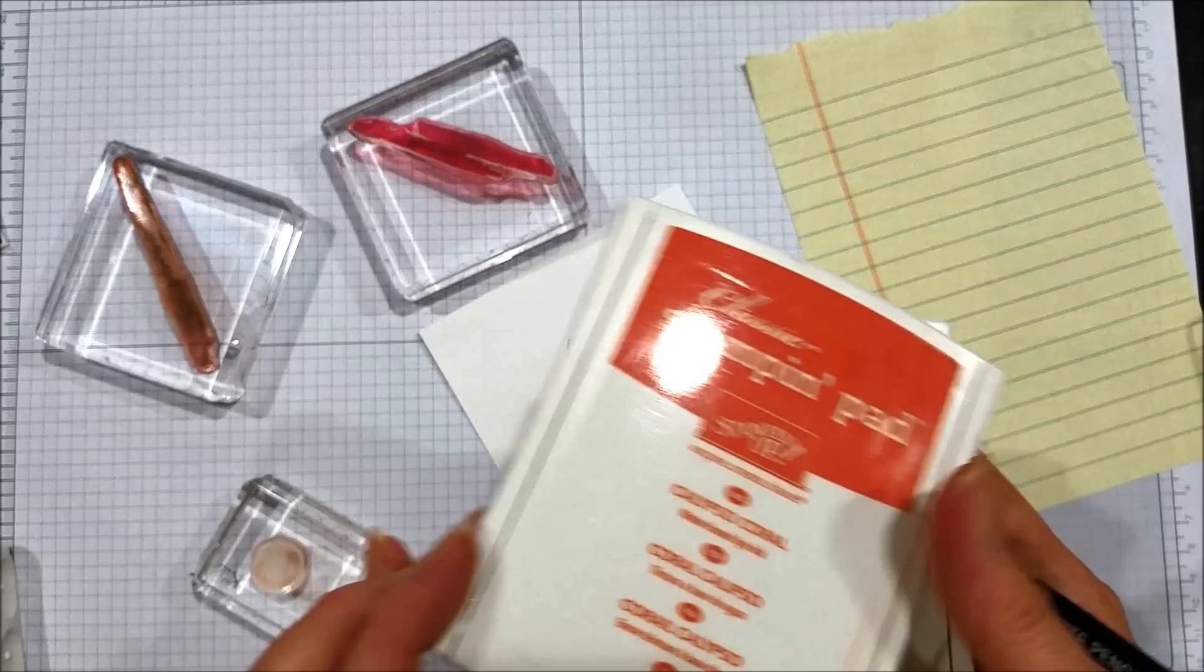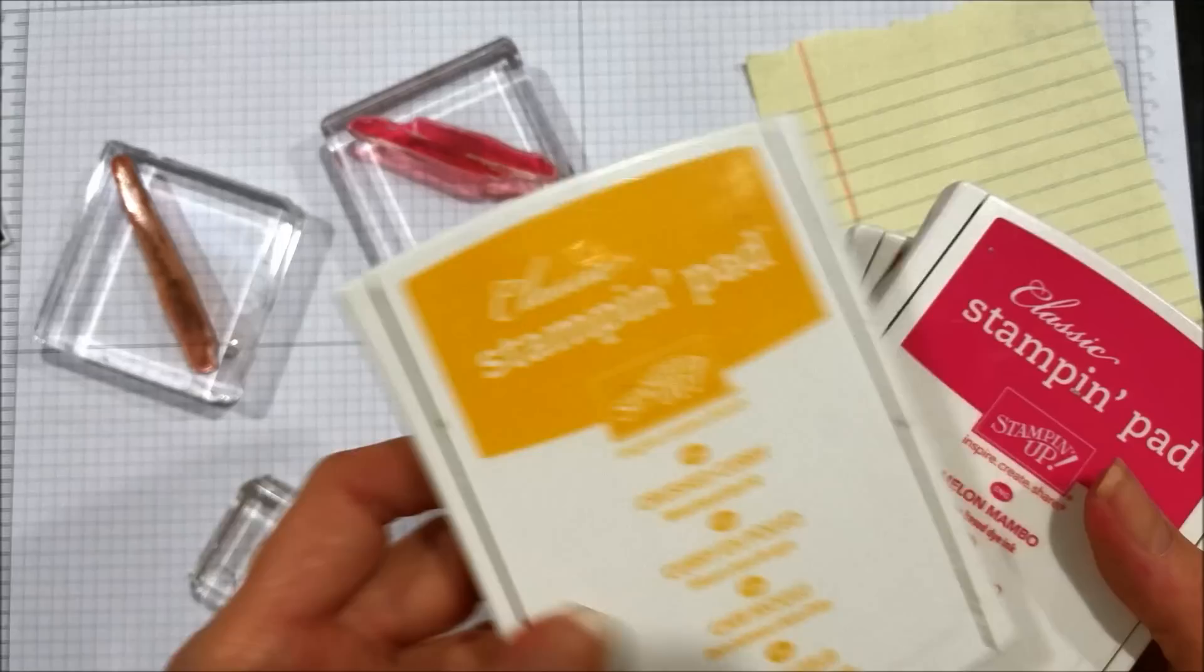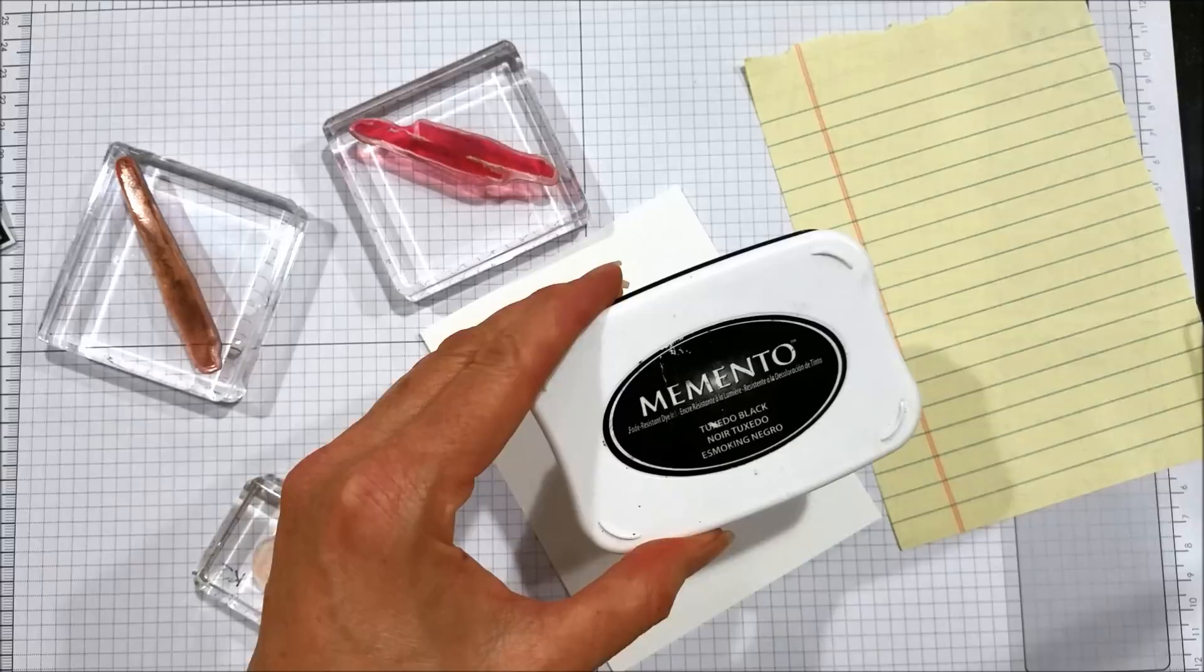Then we will move on to Calypso Coral, then Melon Mambo. At the very end we use Crushed Curry just a little bit, and for the buildings we will be using Tuxedo Black Memento ink.